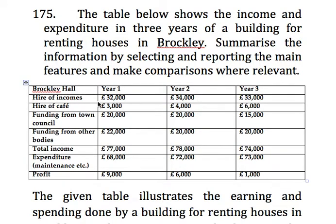This is the table. It has four columns and eight rows. This is Broccoli Hall, and the columns are year one, year two, and year three. The rows show the areas from which income and expenditure are given, with the amounts in the respective year columns.